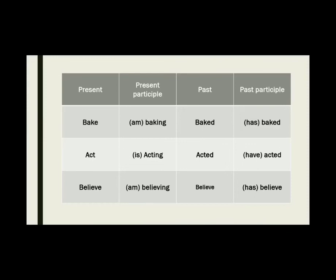Here is a table of principal parts. For 'bake': present — 'bake,' present participle — 'I'm baking,' past — 'baked,' past participle — 'has baked.' For 'act': present — 'act,' present participle — 'is acting,' past — 'acted,' past participle — 'have acted.' And lastly, for 'believe': present — 'believe,' present participle — 'I'm believing,' past — 'believed,' past participle — 'hast believed.'